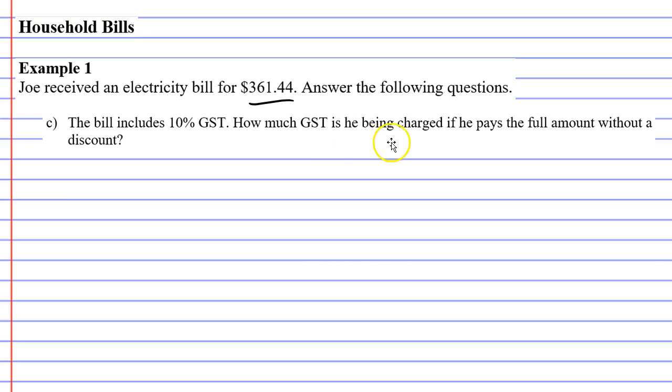How much GST is he being charged if he pays the full amount without a discount? When we say without a discount, we mean he's got to pay the full $361.44. We mentioned a discount in earlier examples.